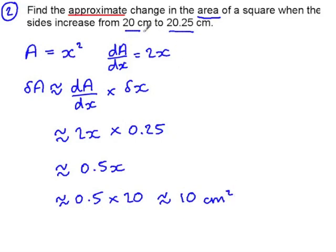Now if you want to know exactly what the change in area of a square is, you can type into your calculator 20.25 squared take 20 squared and you'll find that it is 10.0625.